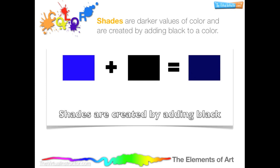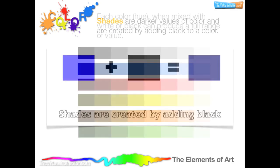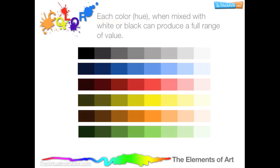Shades are darker values of color, and are created by adding black to a color. For example, when black is added with blue, you create a darker shade of blue. Each color or hue, when mixed with white or black, can produce a full range of value.